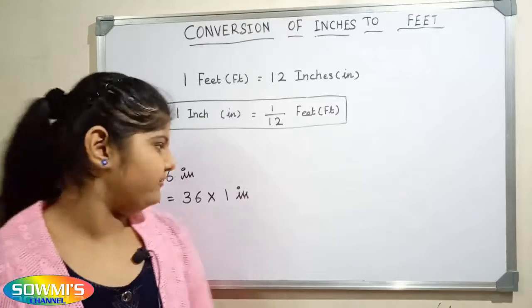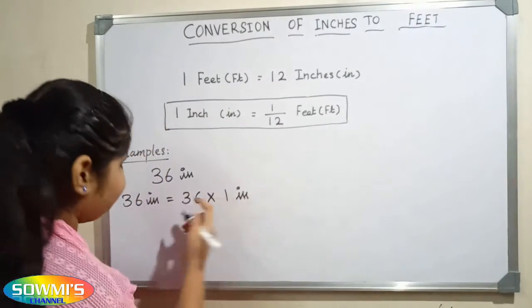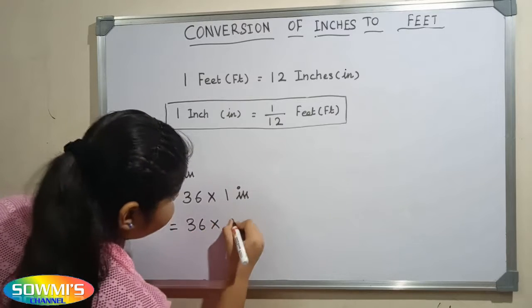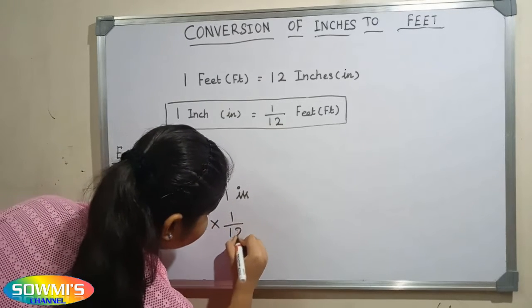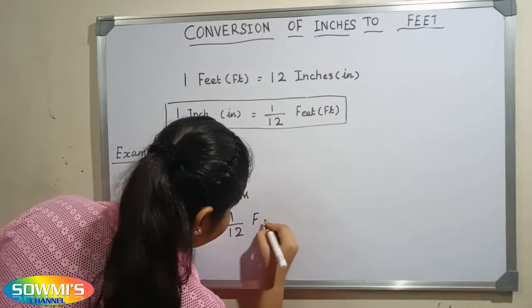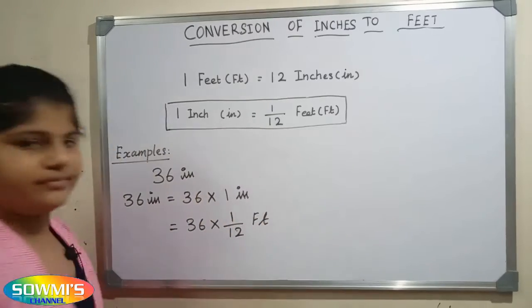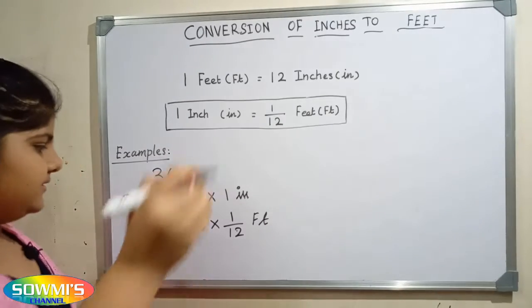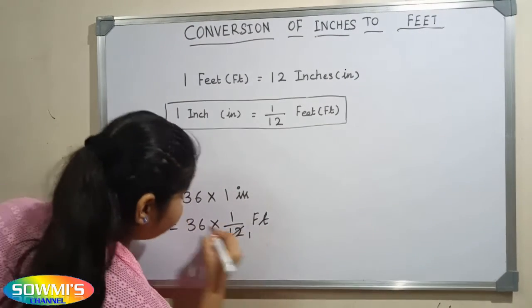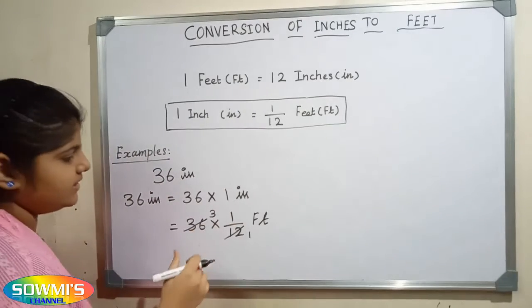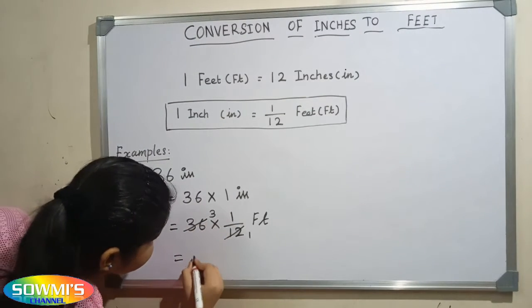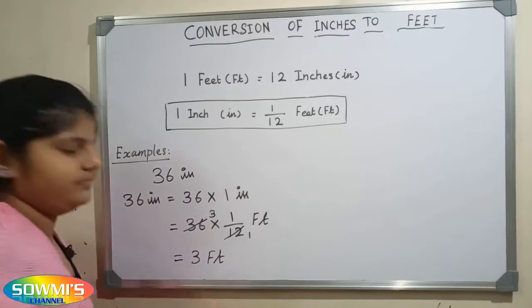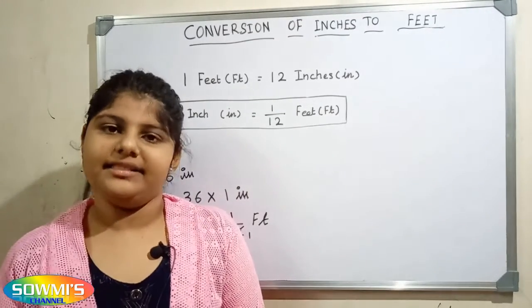So 36 multiply 1 by 12 feet. Here 12 and 36 get cancelled. 12 threes are 36, so the answer is 3 feet.